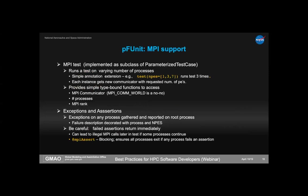PFUnit was the first Fortran framework to support MPI. MPI tests are a specialized case of parametrized tests, where the parameter is the number of processes. The @test annotation takes an optional argument, npes, giving an array of process counts. For example, npes=[1,3,7] runs the test three times — once with one process, once with three, and once with seven. Each test gets its own communicator, and the framework provides easy access to the communicator, process count, and MPI rank.